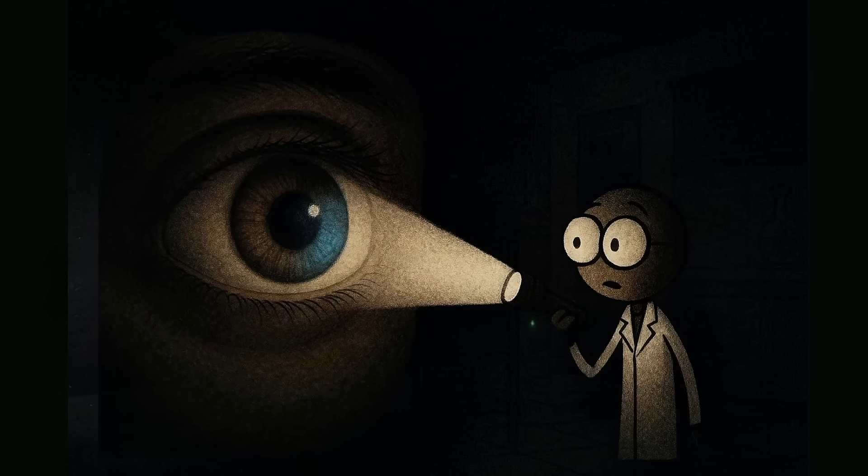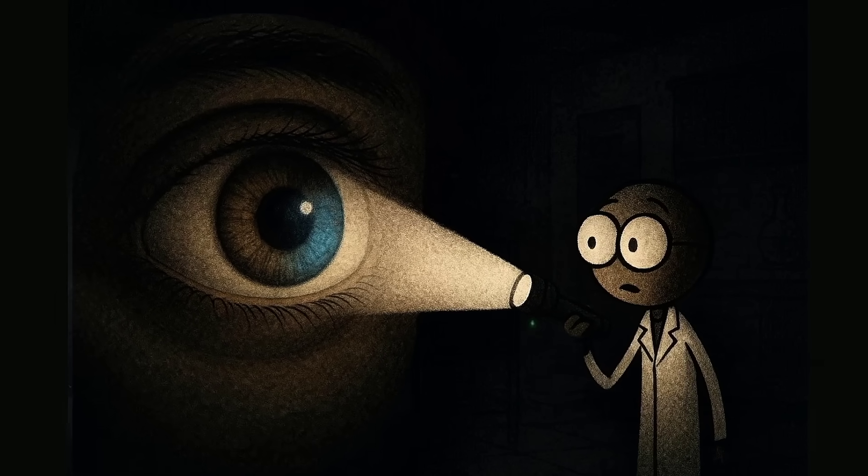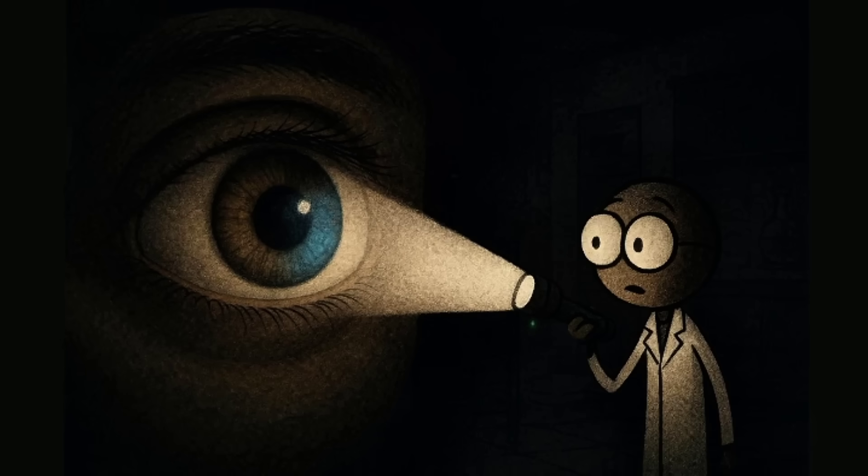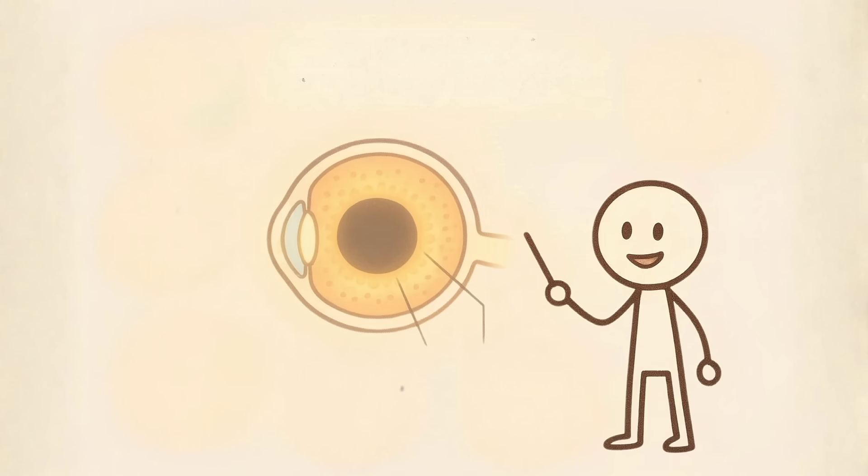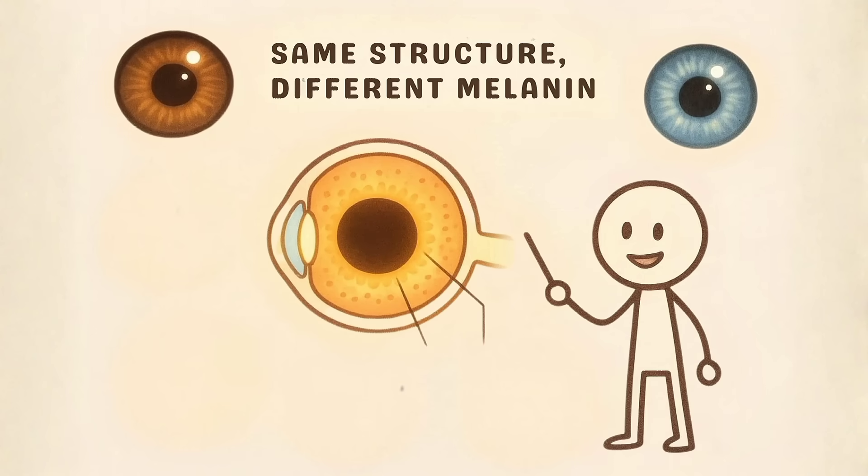And here's the wild part. If we shined a bright enough light through a brown eye, don't try this at home, it might actually look blue underneath. That's because technically, everyone's eyes have the same structure. Just different amounts of melanin.